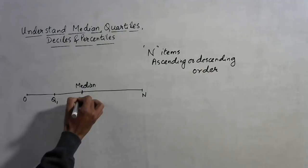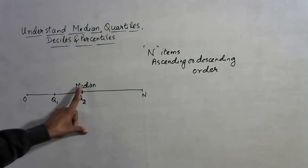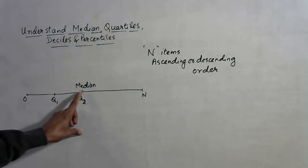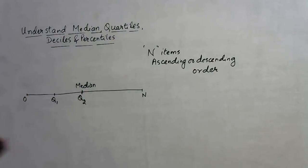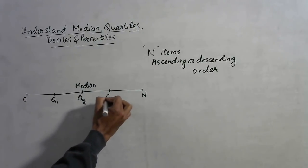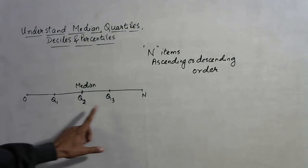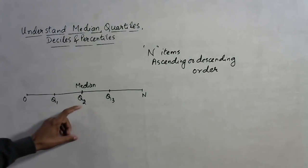The median can also be known as the second quartile, because two quarters means 50%, and 50% means median. So the second quartile is the value below and above which 50% of values lie. Similarly, the value which divides the entire data range into parts of 75% and 25% is called the third quartile Q3.